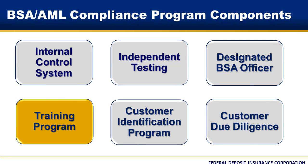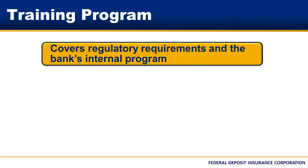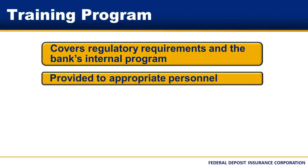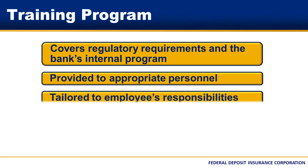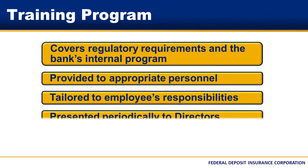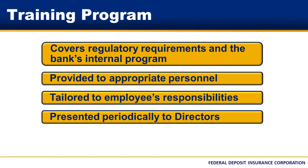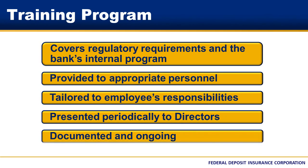Let's move on to the training component. Training should include regulatory and statutory requirements and cover the bank's internal BSA AML policies, procedures, and processes. Training must be provided to all personnel whose duties require knowledge of the BSA and should be tailored to the employee's specific job responsibilities. The BSA officer should also receive training appropriate for coordinating and monitoring BSA AML compliance given the bank's activities and risk profile. As a director, you should receive periodic training to reinforce BSA concepts and stay informed of developments in the BSA. All training should be documented and conducted on an ongoing basis to reinforce compliance responsibilities and cover changes to the BSA.